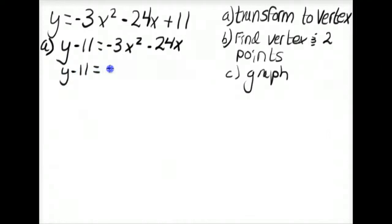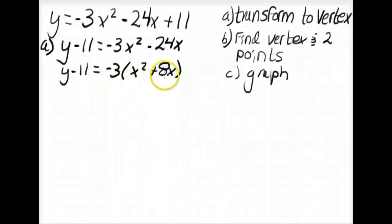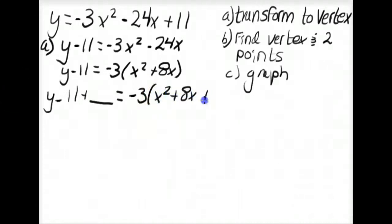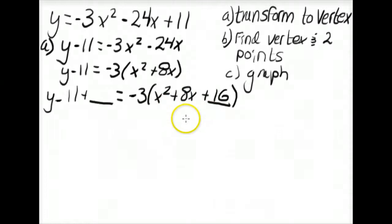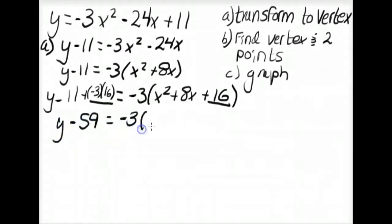Factoring gives y minus 11 equals negative 3 times (x squared plus 8x). Completing the square: divide the b term 8 by 2 to get 4, then square to get 16. We add 16 inside the parentheses, but since it's multiplied by negative 3, we're really adding negative 3 times 16 to the equation. Compensating on the left gives y minus 59 equals negative 3 times (x plus 4) squared.